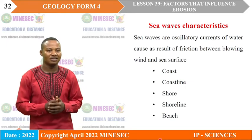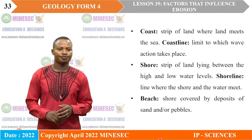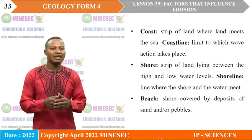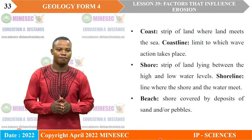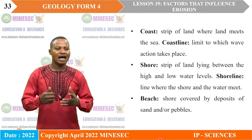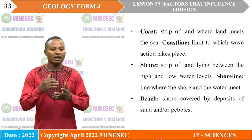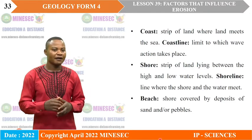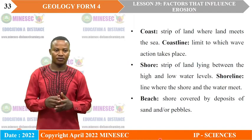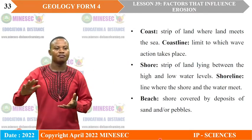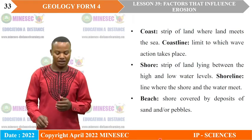Sea waves affect the surroundings of seas and produce features: the coast is a strip of land where the land meets the sea; the coastline is the limit to which wave action takes place; the shore is a strip of land lying between the high and low water level; the shoreline is where the shore and the water meet; and the beach is the shore covered by deposits of sand or pebbles — for example, pink sand at Kribi and dark sand at Limbe.